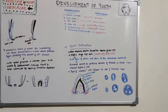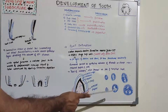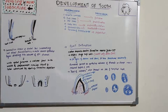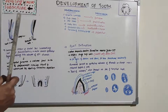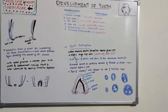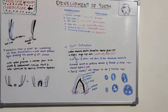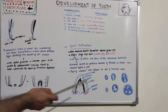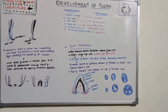In multi-rooted teeth, differential growth of the epithelial diaphragm causes division of the root trunk into two or three roots. During expansion of the cervical opening, long tongue-like extensions of the horizontal diaphragm develop, and their free ends grow towards each other and fuse, dividing the single cervical opening into two or three openings.